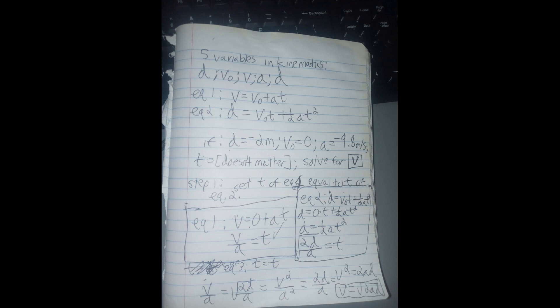The first kinematic equation is v equals v-naught plus at, where v equals final velocity, v-naught equals initial velocity, acceleration is a, and t is time. By the way, it might be useful to take notes, because we're going to do a lot of math.